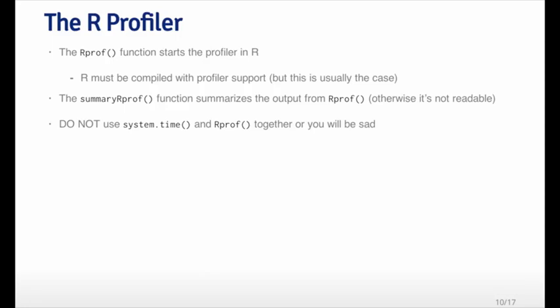The other function that's useful is the summaryRProf function, which takes the output from the profiler and summarizes it in a way that's readable, because the raw output from the profiler is generally not very usable. It's important to realize that you should not use the system.time function and the RProfiler together — these are not designed to be used together. So you should always use one or the other and not both.